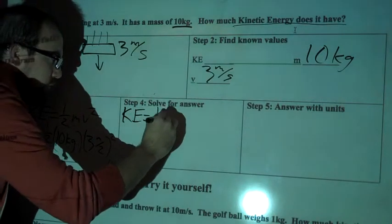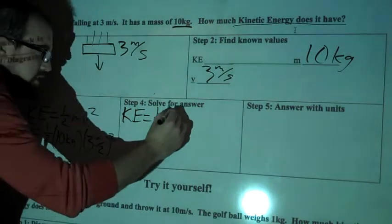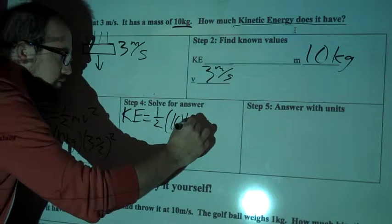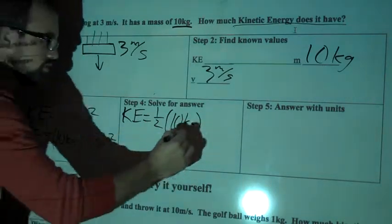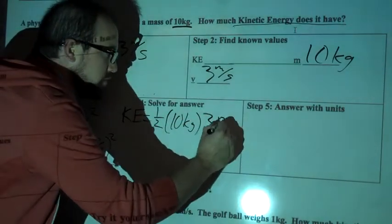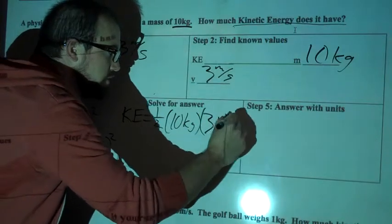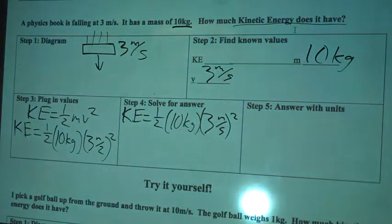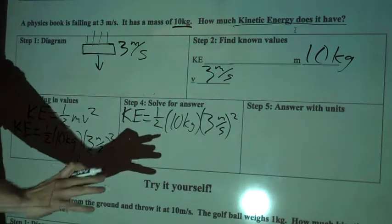So re-copy it down here, so kinetic energy equals 1 half, and then we've got 10 kilograms, times 3 meters per second squared.